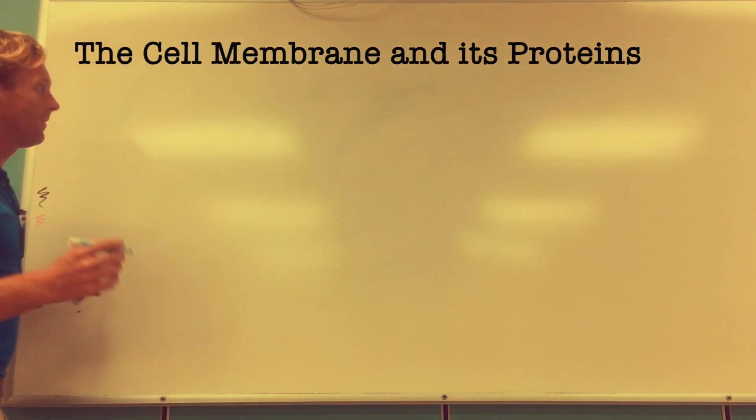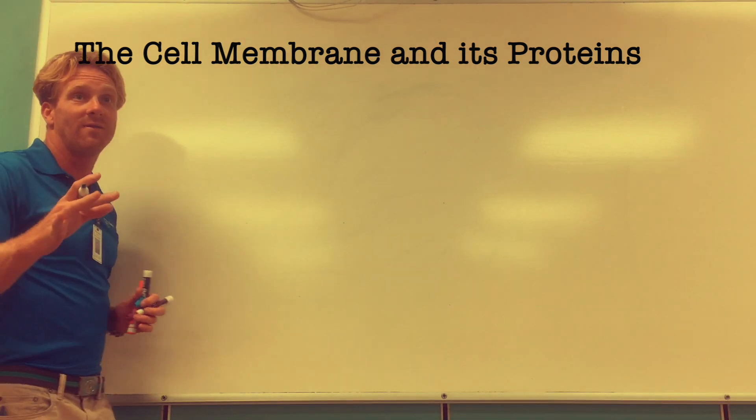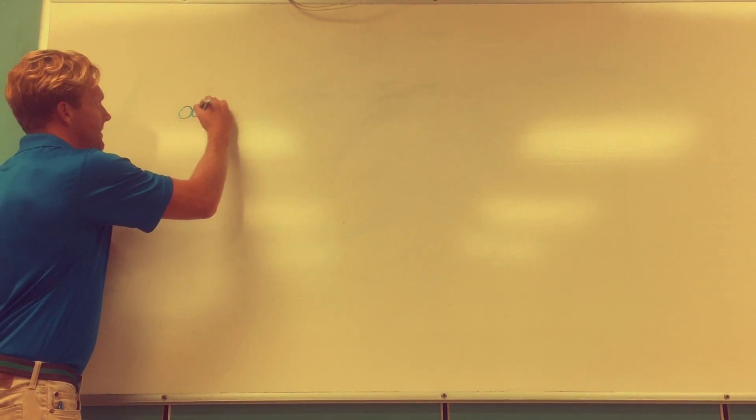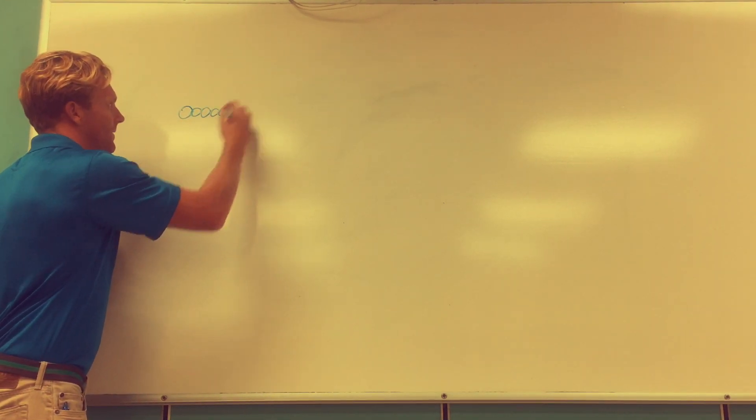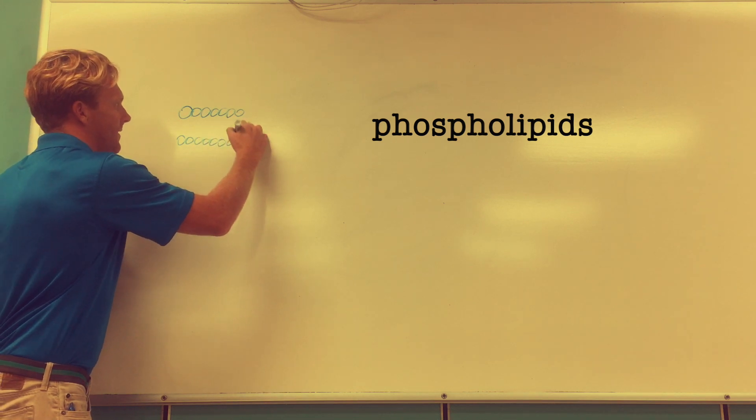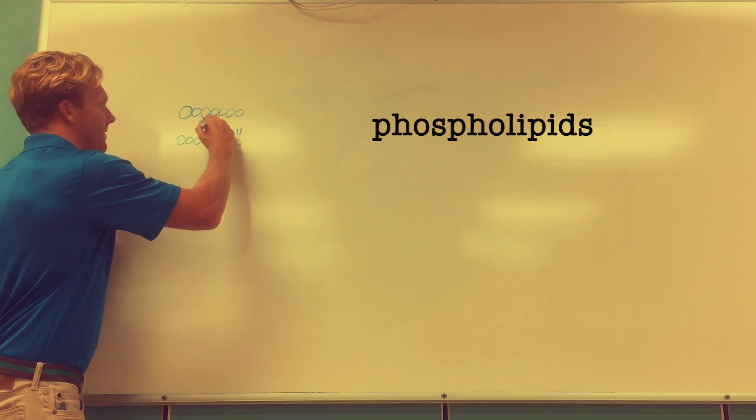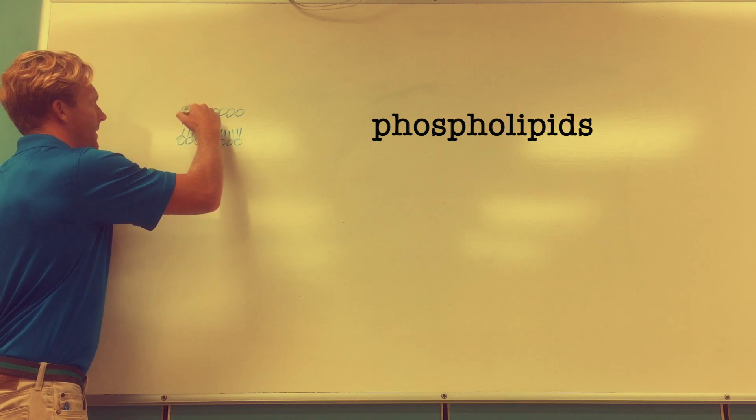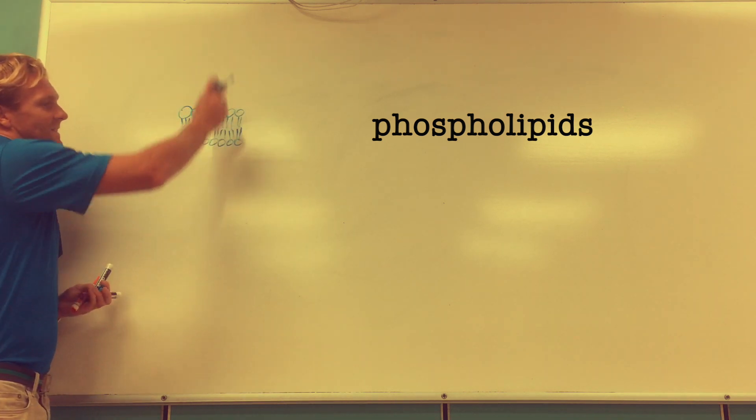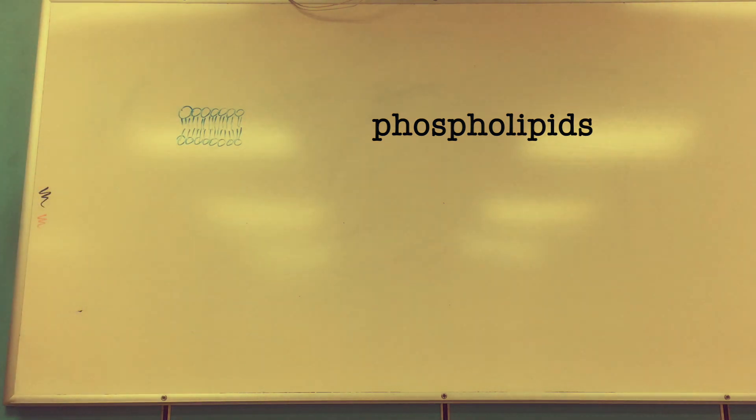If we remember the cell membrane, the primary component are phospholipids. We'll have a series of phospholipids. These guys have their polar heads and their nonpolar tails that kind of look a bit like this. This will be the inside of the cell and that will be the outside of the cell.